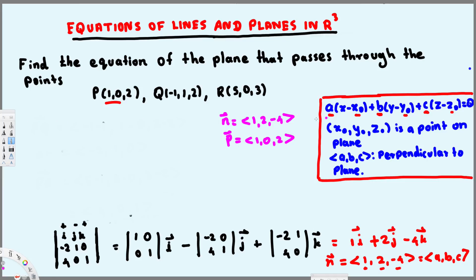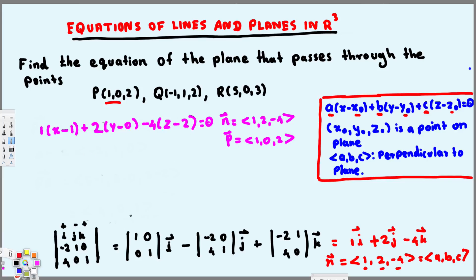Now we write the standard form. Since a, b, c are the normal vector components, we get: 1(x − 1) + 2(y − 0) + (−4)(z − 2) = 0. Simplifying: x − 1 + 2y − 4(z − 2) = 0, which gives x − 1 + 2y − 4z + 8 = 0. This is the standard form of the equation of the plane.